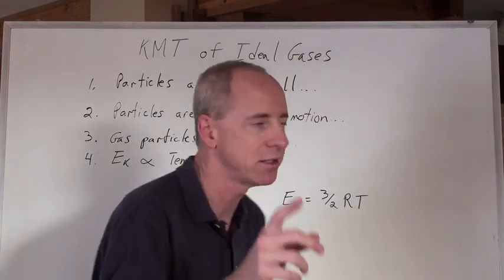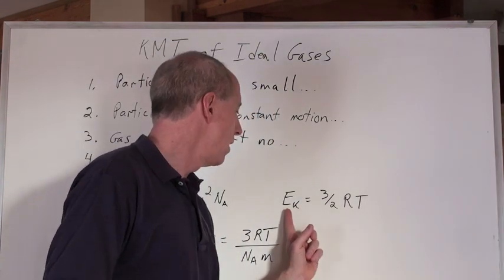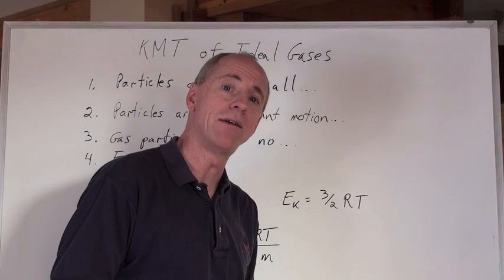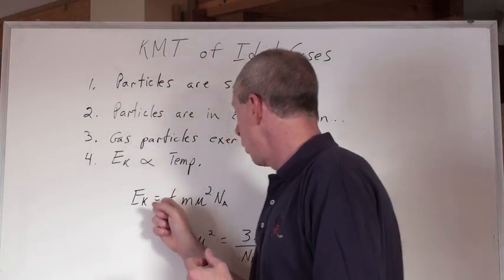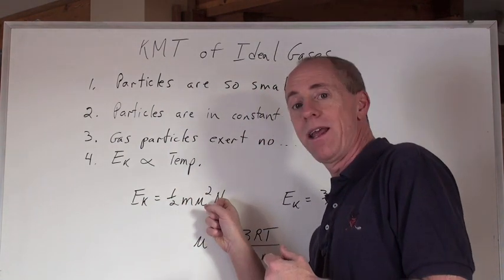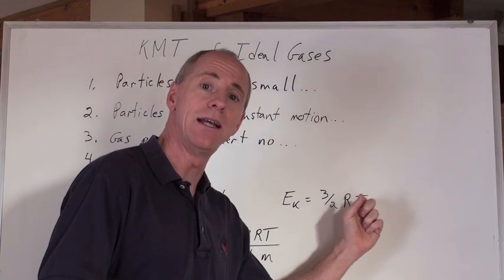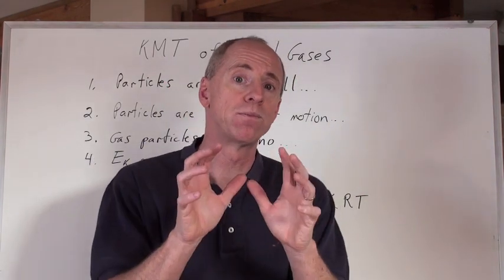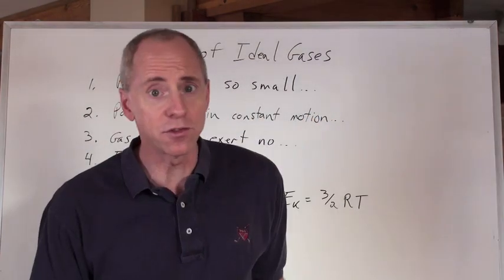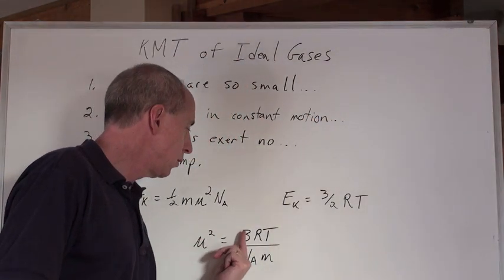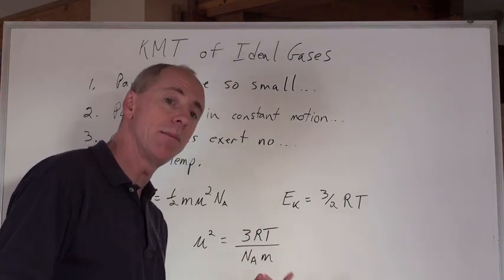Here it comes. Watch this. If we take the other formula that you don't necessarily know, maybe, that kinetic energy also equals three-halves RT, if you put those two together, those two formulas, you're going to get that one-half m mu squared times Avogadro's number equals three-halves RT. And if you rearrange to solve for the speed, velocity...